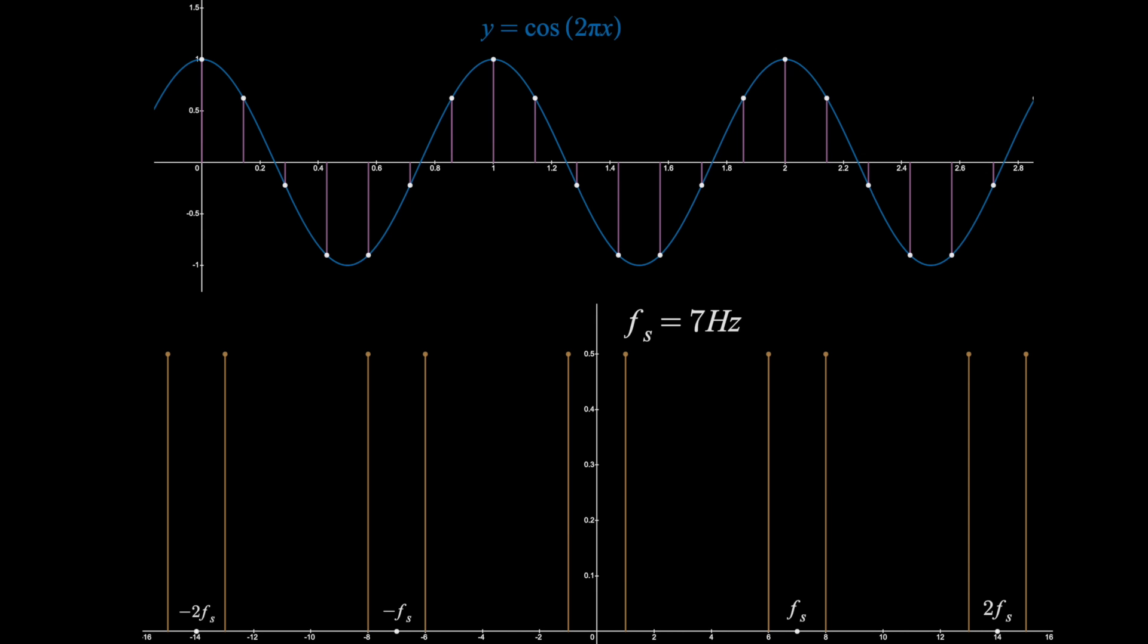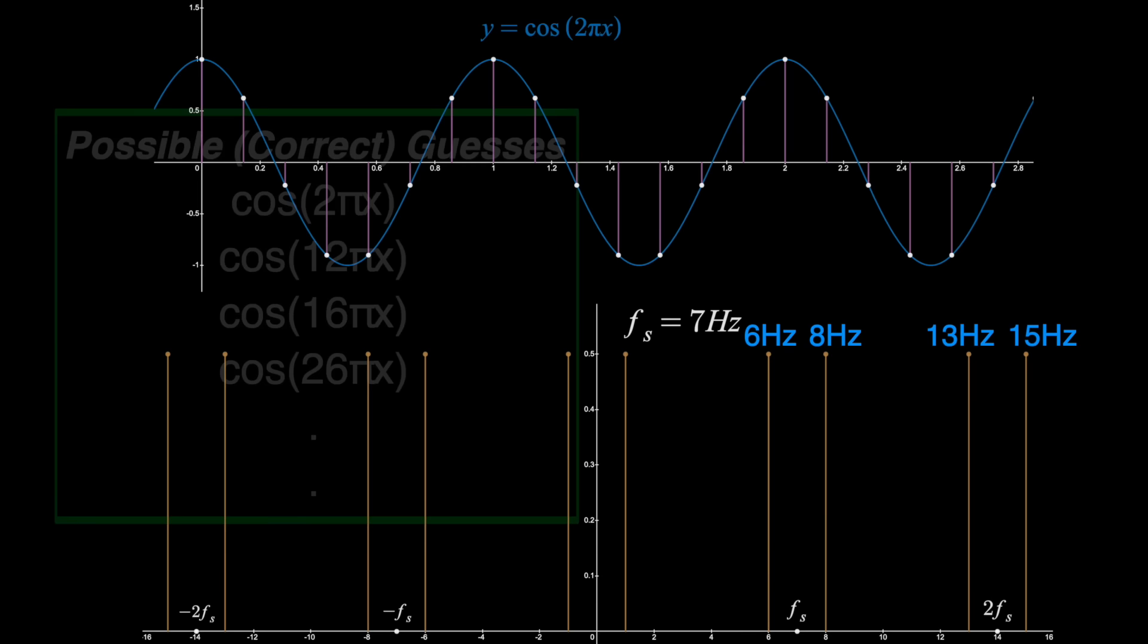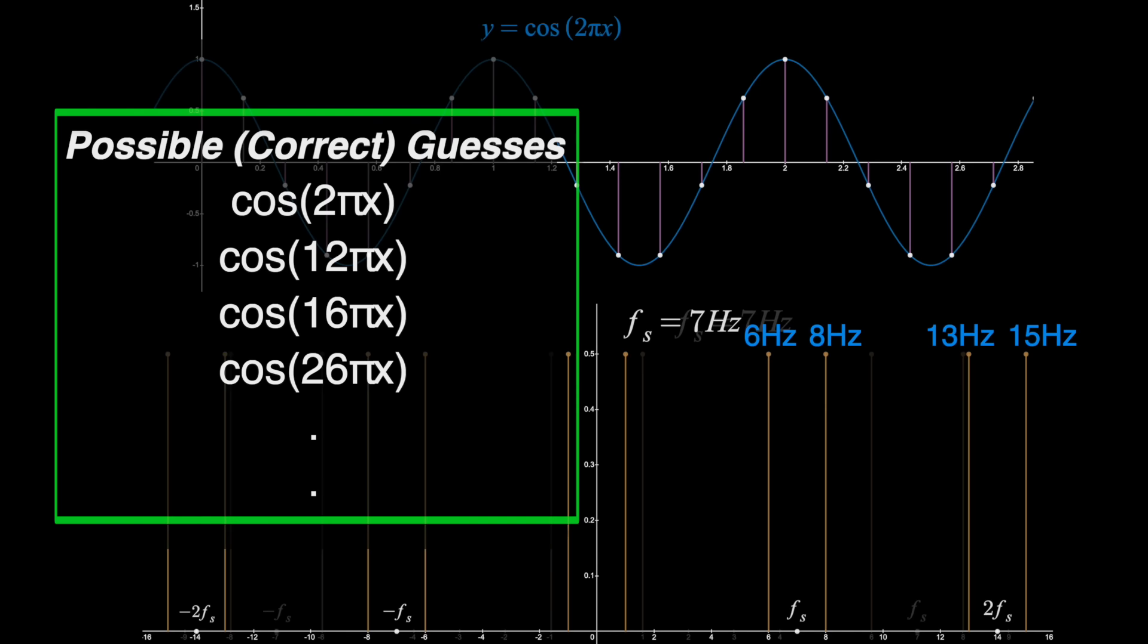So in the frequency domain after sampling, we'll find spikes at six hertz, eight hertz, 13, 15, and all the numbers I showed before. That is where they come from.